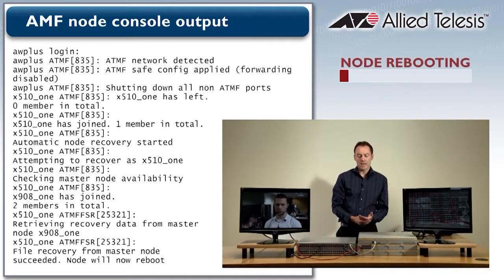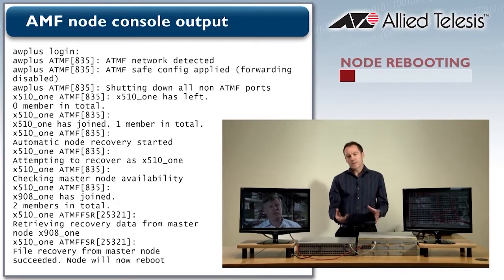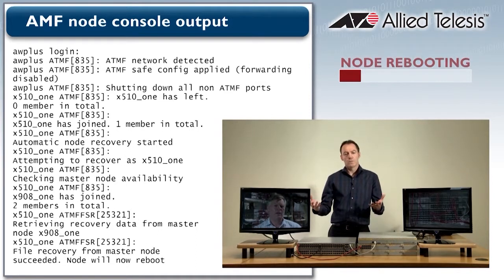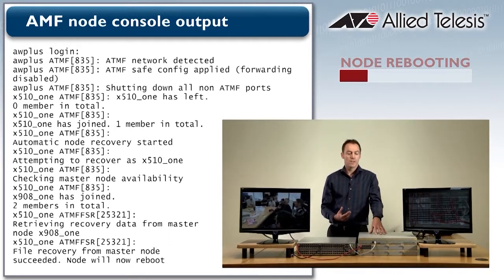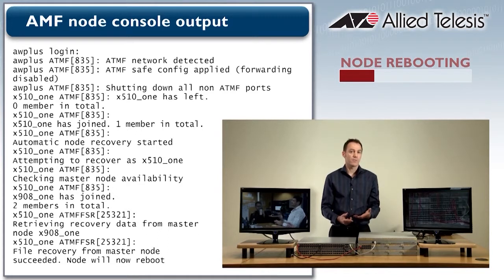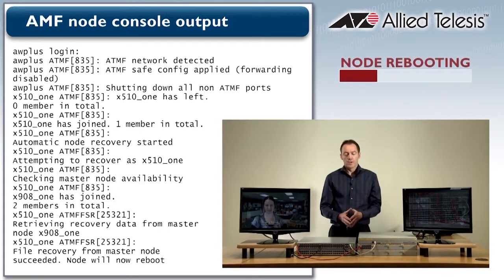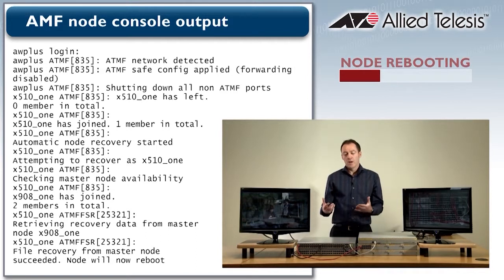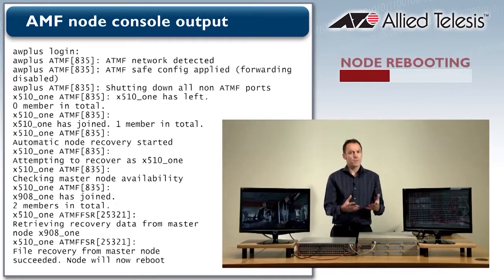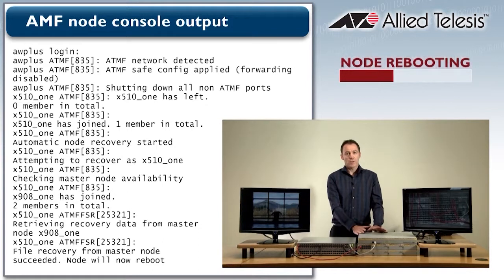So how AMF manages these backups: the AMF master, once every 24 hours by default, will reach out to all the AMF nodes on the network and pull the latest configuration files and even the latest firmware files, storing them on the memory card. There's an SD card at the front of this X908, and that's where it stores all the configuration files and release files for all the nodes on the network. So as a network administrator, you don't have to worry about managing your own library of configuration files, making sure everything is up to date, or ensuring that any changes get synchronized into your library.